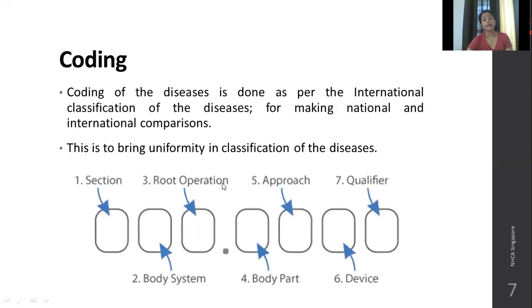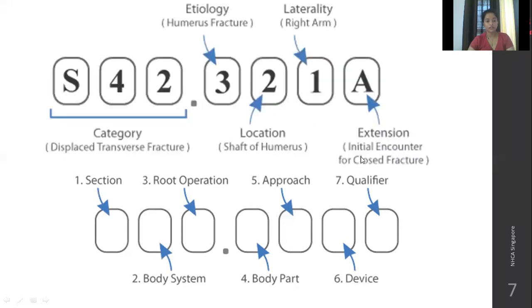Coding of diseases is done as per the International Classification of Diseases (ICD) for making national and international comparisons, ensuring diseases are coded in a uniform manner across the world, making it easy to exchange information between countries. For example, a left arm fracture in common terms receives a specific ICD code: S44 is the category for displaced transverse fracture; the next digit indicates it is in the humerus bone; the following digit specifies the location within the humerus — for example, the shaft.